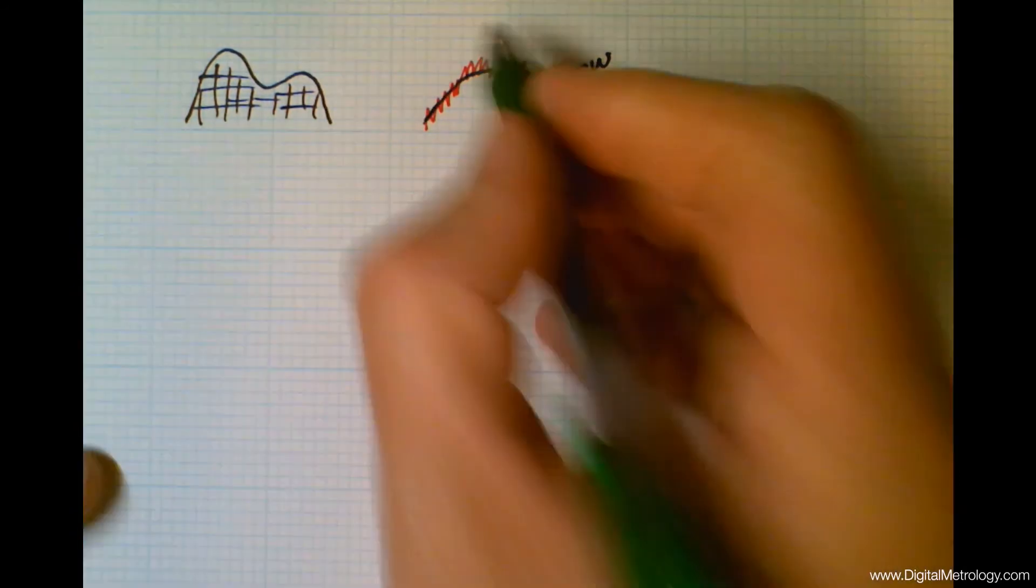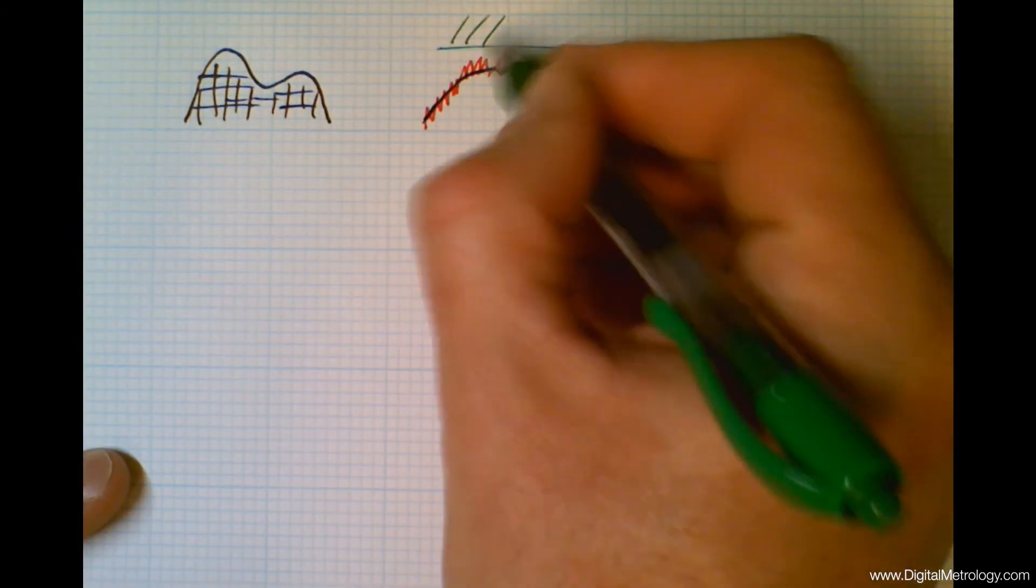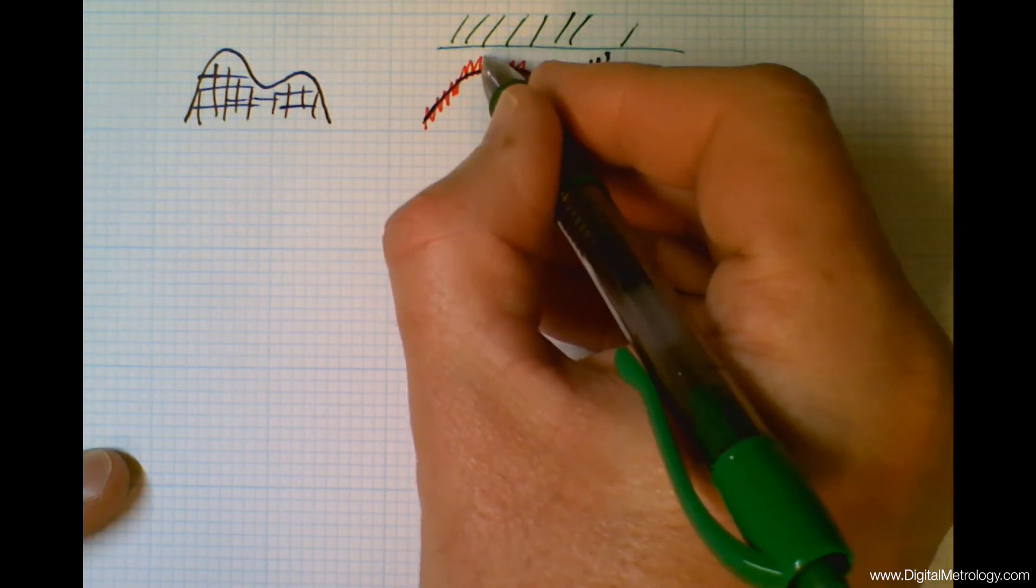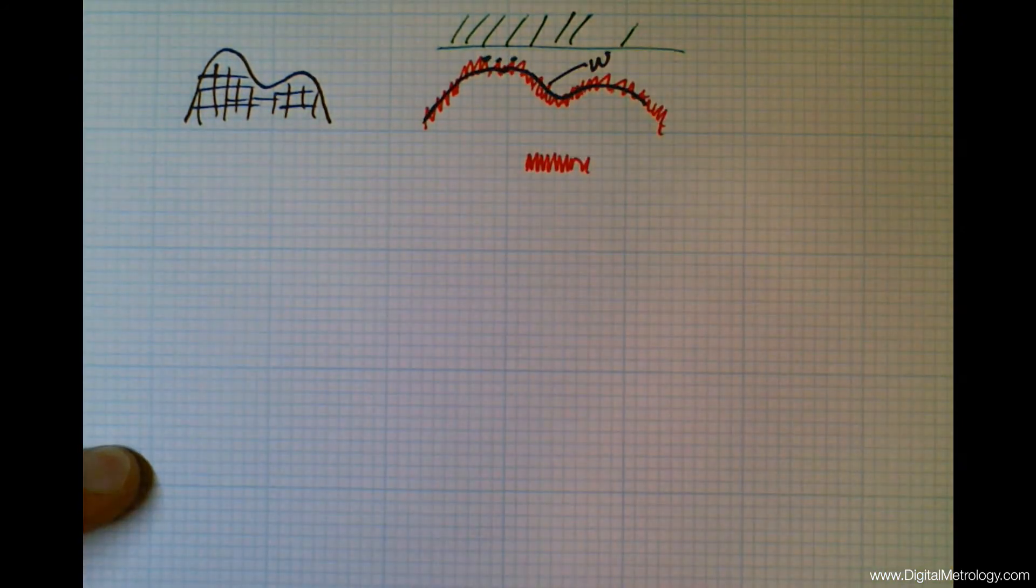If I were to press another surface against it, it's not the roughness that would matter, it's the waviness that would dictate the fact that we only have two or three points touching.